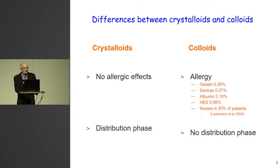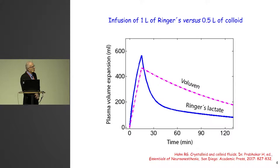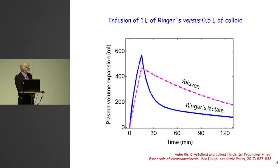The next slide is created from what I call fluid volume kinetics. It's a method I have worked very much with — a kinetic approach which allows you to predict what happens with infusion fluids in the body. Here you see what will happen to the plasma volume if we infuse one liter of Ringer's acetate or lactate, compared with half a liter of colloid over 15 minutes. It's a pretty rapid infusion, and you see that they end up at about the same plasma volume expansion.